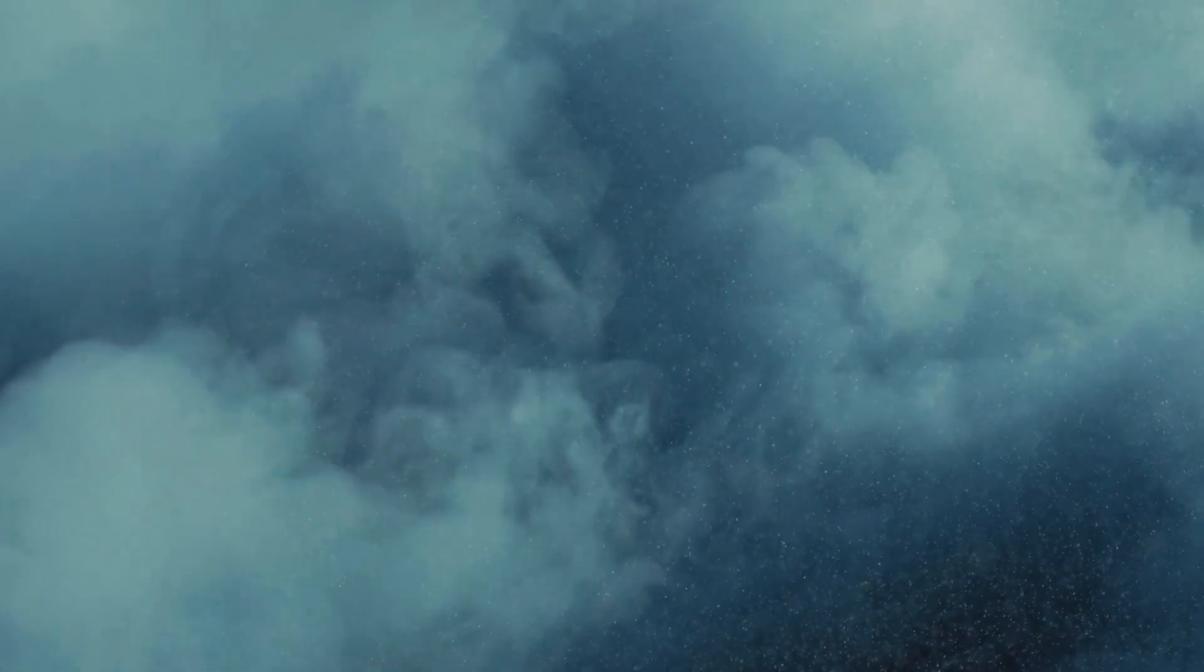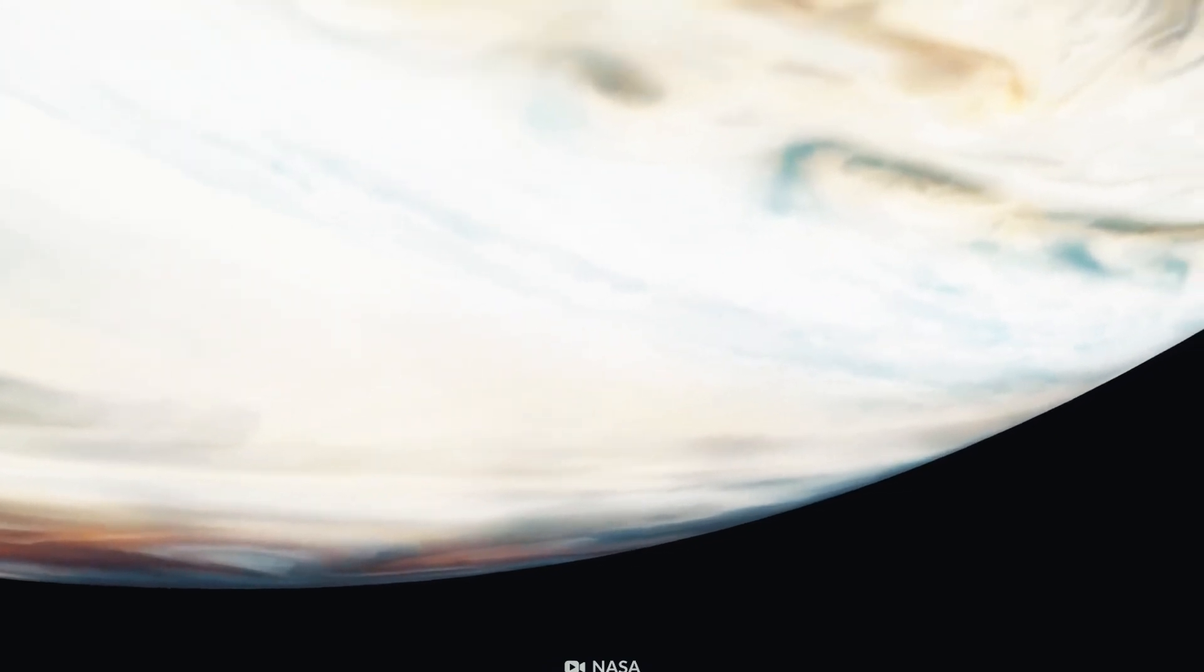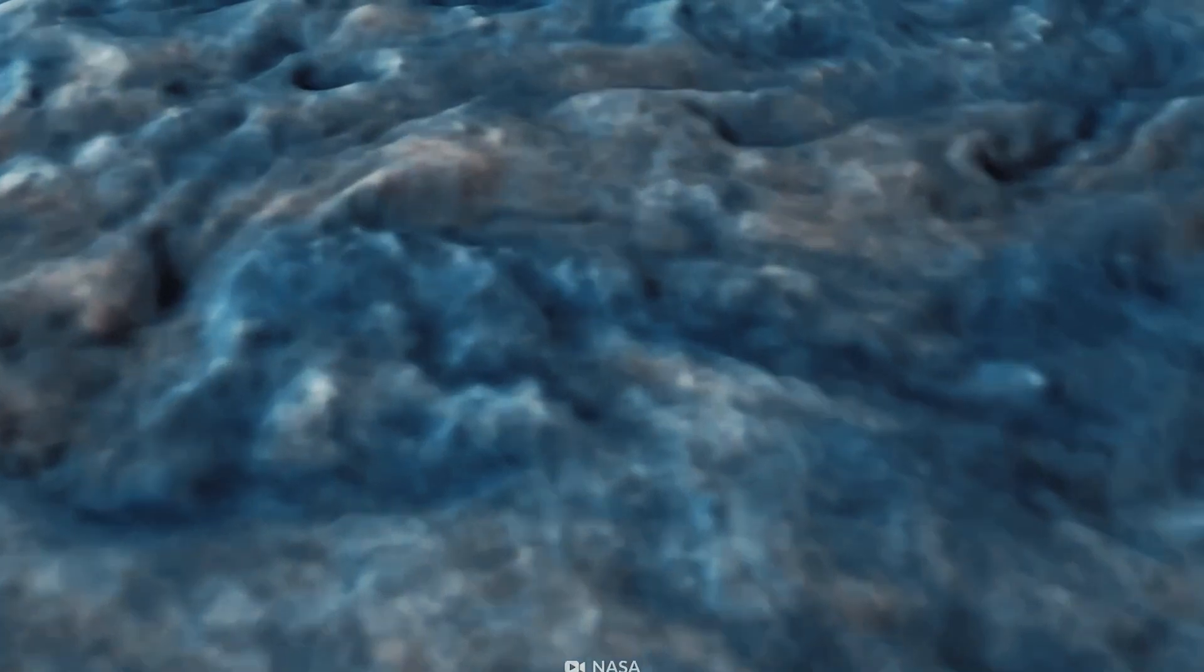The light that Europa emits or reflects is meticulously examined throughout a spectrum of hues in order for this technique to function. This helps scientists understand the physical and chemical composition of the moon's surface. Scientists can determine that the moon's surface is covered in water ice by closely examining Europa's spectral signatures.